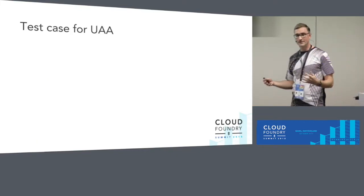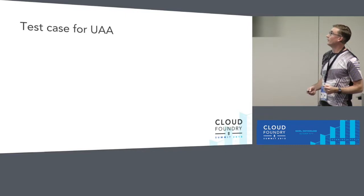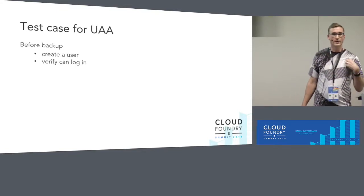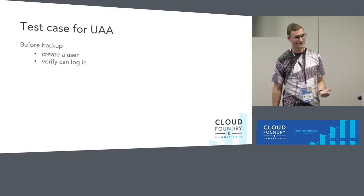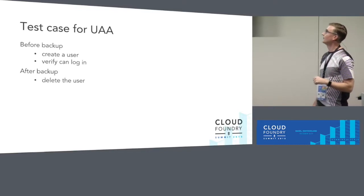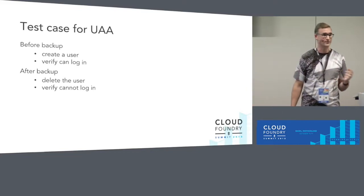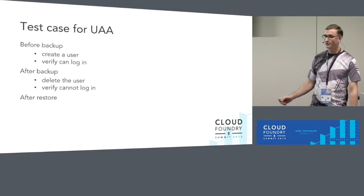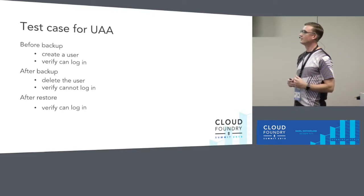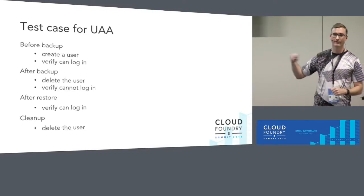Let me step you through one of the genuine test cases — there's one for UAA, User Authentication and Authorization. Before backup, we create a user and verify we can log in. We know the UAA team has created an entry in UAA's database, but we've done it at the platform level using CF create-user and CF login. After backup, we delete it and make sure it's gone — login does not work. Then we run restore, and we should be able to log in again. The state has come back — that UAA entry in its database has come back. Then afterwards, we delete the user so we can run this test again and again.